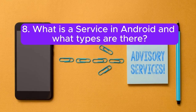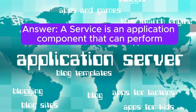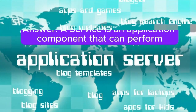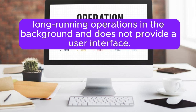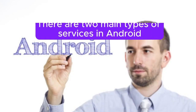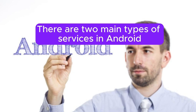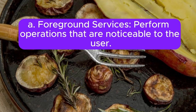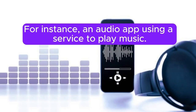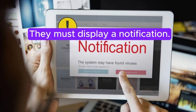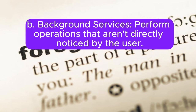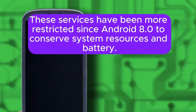Question 8: What is a service in Android and what types are there? A service is an application component that can perform long-running operations in the background and does not provide a user interface. There are two main types: Foreground services perform operations noticeable to the user — for instance, an audio app using a service to play music — and must display a notification. Background services perform operations not directly noticed by the user; these have been more restricted since Android 8.0 to conserve system resources and battery.